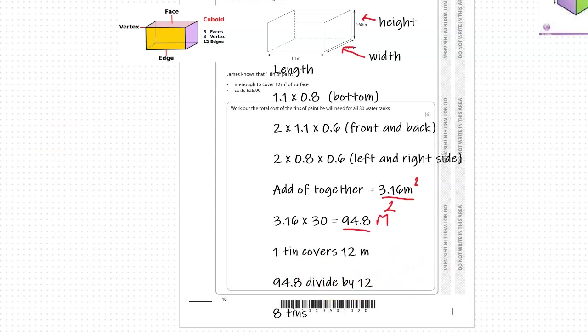If you did that in a calculator, you would get 7.9, and that refers to 7.9 tins. But you can't go to the shop and ask for 7.9 tins, you have to go and ask for 8. So 8 is the answer for the tins.